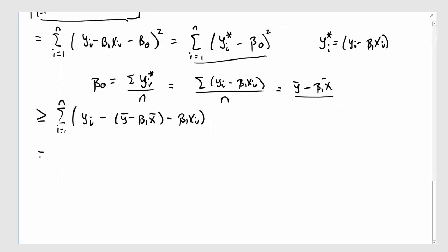Now, this is equal to summation i equal 1 to n, yi minus y bar minus xi minus x bar times beta 1 squared. And I forgot my square right there.